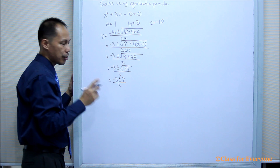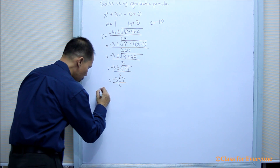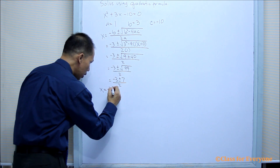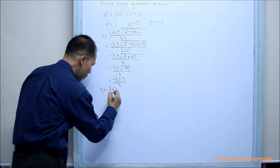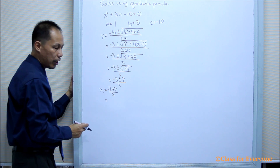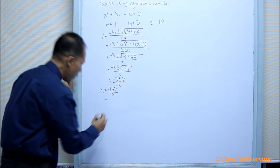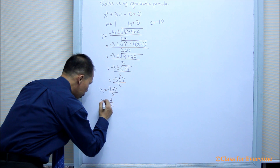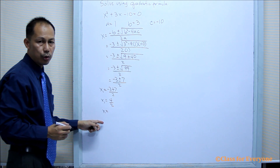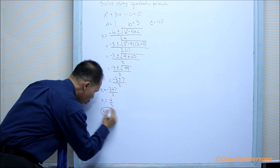First, we take the positive root. So x₁ will be negative 3 plus 7, all over 2. The sum of the numerator is positive 4 over 2. Therefore, the first root in simplified form is 2.